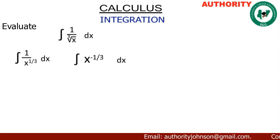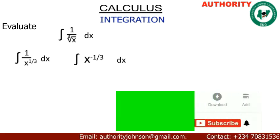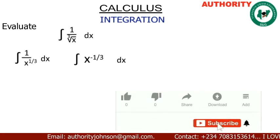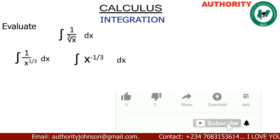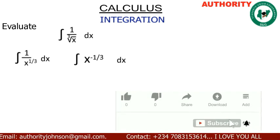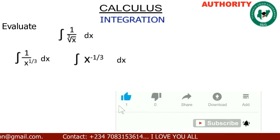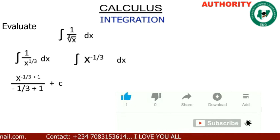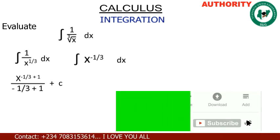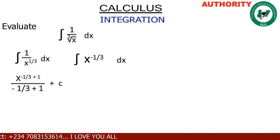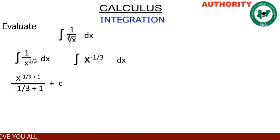Now this x raised to the power negative 1/3 can also be written as 1 all over x raised to the power 1/3. Now we have the x. That means we're going to have x raised to the power negative 1/3 plus 1, all over negative 1/3 plus 1.